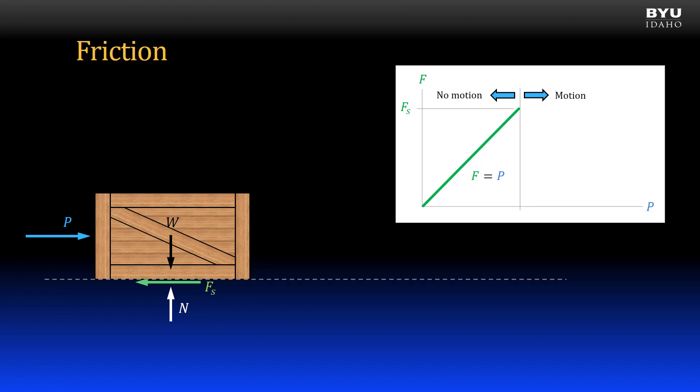I am now at the point where the friction will no longer be able to increase to balance the applied force. If I increase the applied force any more, I will get motion in the crate, since the friction force will be insufficient to balance the forces and maintain static equilibrium. We call this condition the point of impending motion.